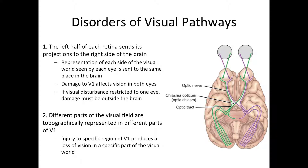Before we consider deficits associated with damage to the visual pathways, we must revisit something from a previous video. There are two key elements in the way our brain organizes the visual fields. First, the left half of each retina sends its projections to the right side of the brain, and the right half of each retina sends its projections to the left side of the brain.